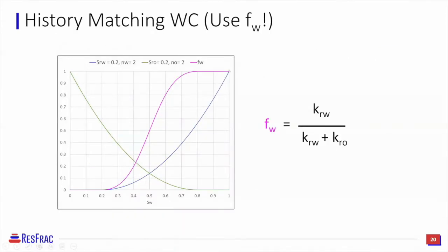The fractional flow curve will be a critical component to history matching simulations. It's very easy to calculate — you just take the relative permeability of the water phase divided by the relative permeability of the water phase plus the oil phase. You get a nice S-curve which tells you at any given saturation what your water cut will be.